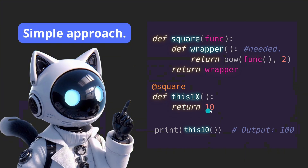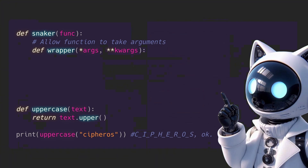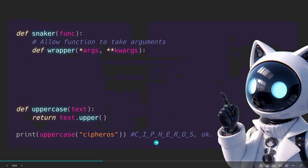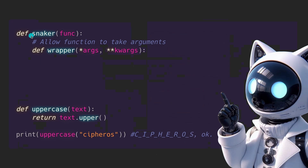So once we declare this basic function that just returns the number 10 no matter what, this will be passed into the square decorator. This is how decorators work. Another example, a little bit more complicated, will be this one — we're going to get a text as parameter, uppercase it, then separate each letter with an underscore. As you can see, we have the decorator — in this case it would be the snaker — and then we're going to have the uppercase function.